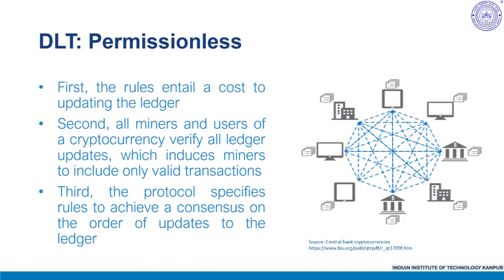This decentralized permissionless mechanism results in three important features. First, the rules entail a cost to updating the ledger — in most cases from a proof-of-work consensus mechanism, which is a mathematical evidence that a certain amount of computational work has been done, requiring costly equipment and electricity consumption. Since this process can be likened to digging up rare numbers via laborious computations, it is referred to as mining, and those who do it are called miners. In return for their efforts, miners receive fees from users — block rewards and transaction fees — and if specified by the protocol, newly minted native cryptocurrency.